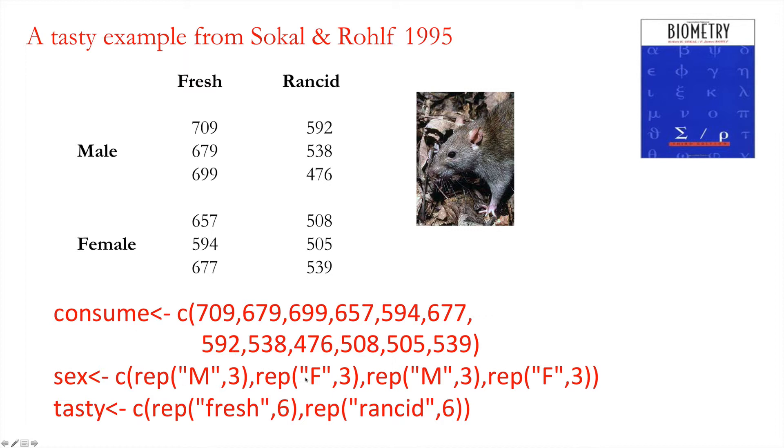And then we've got the state. I've called it tasty, whether all of these are fresh or rancid. So we've created three vectors, one for consumption, one for sex and that varies male, female and so on. And one for the state, which I've called tasty, which is six freshes and six rancids. And that collectively represents this entire data set.